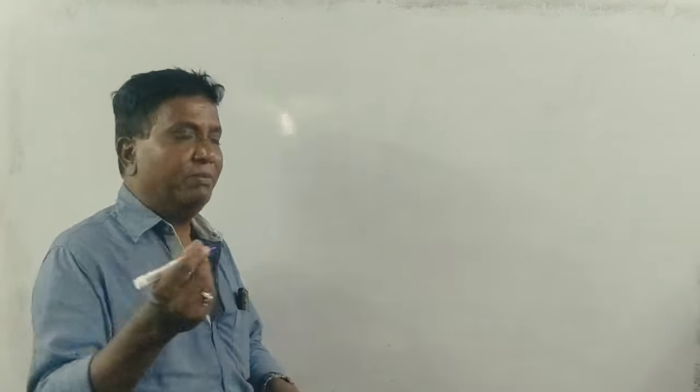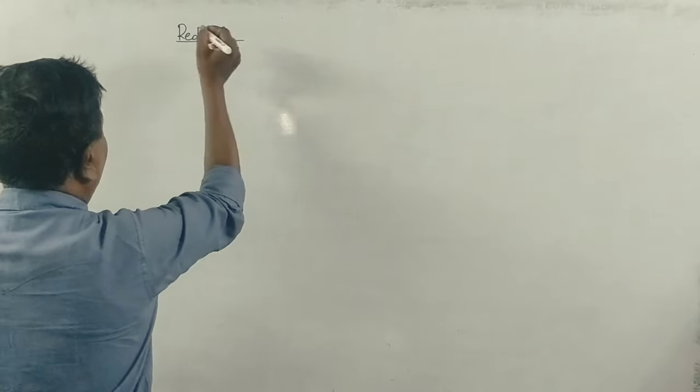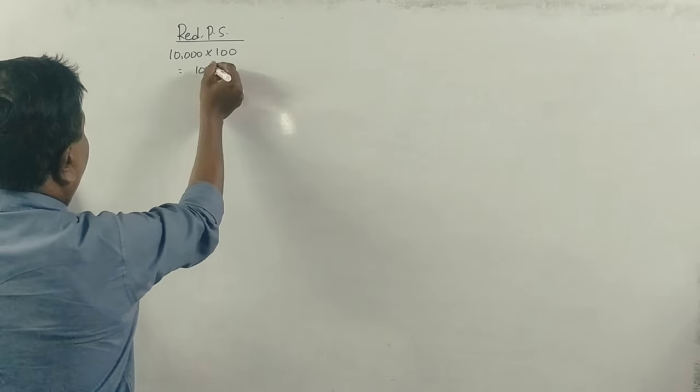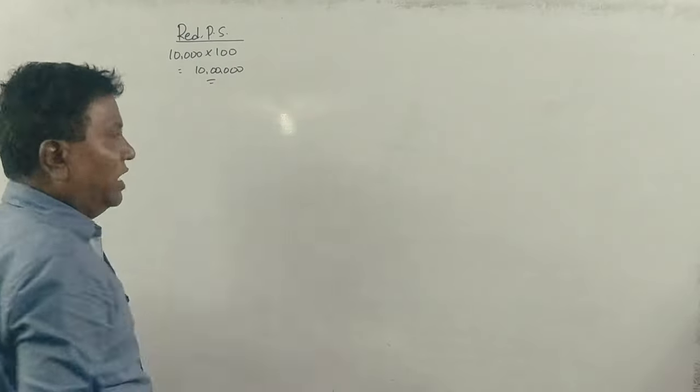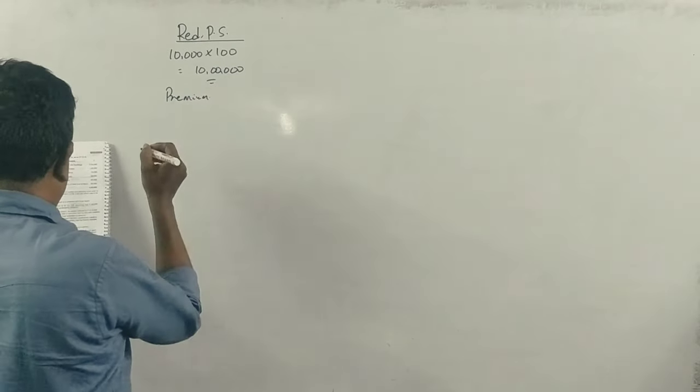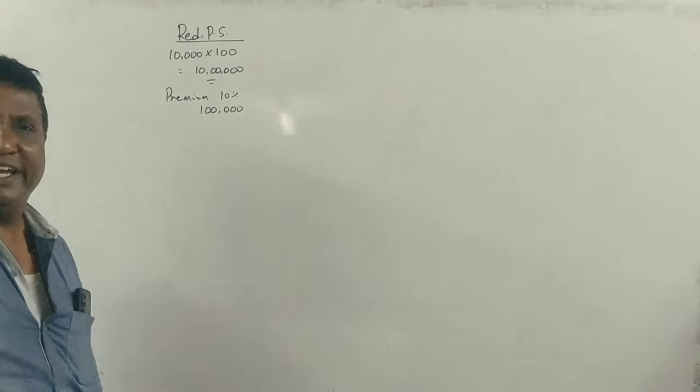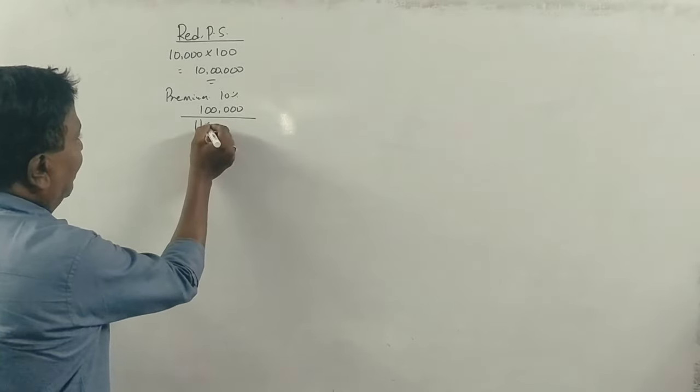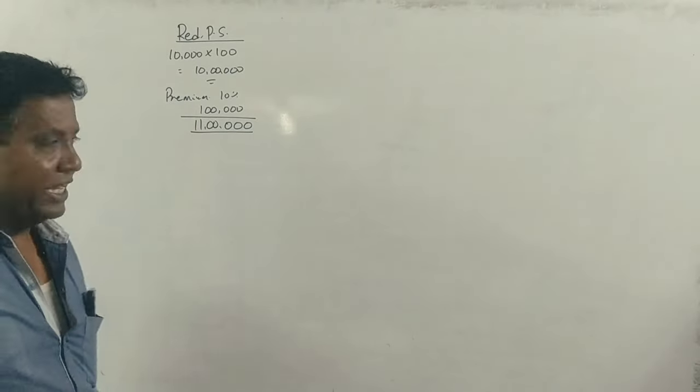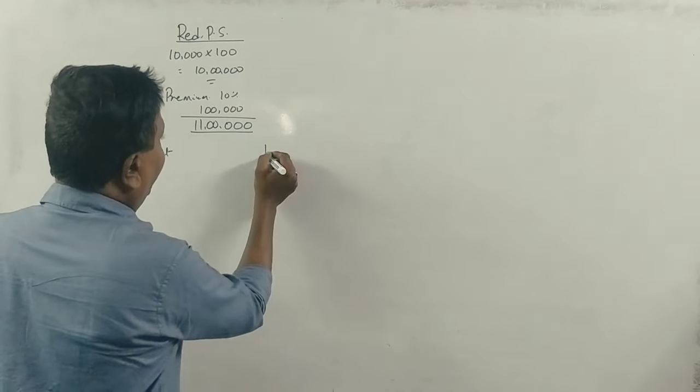Now, redeemable preference shares total loan offers 10,000 shares of 100 each. That means 10 lakh rupees. We have to pay 11 lakh rupees to preference shareholders. If we have 11 lakhs, we have a legal aspect and a financial aspect.